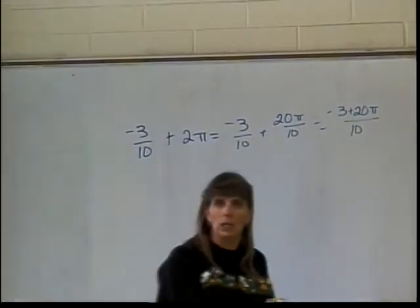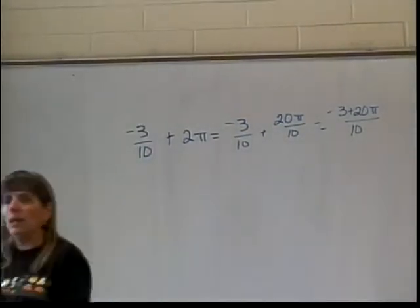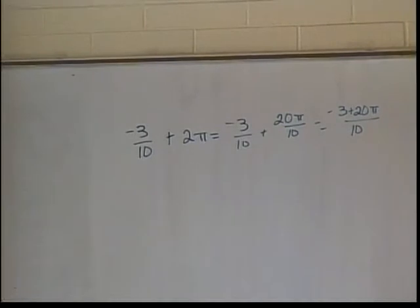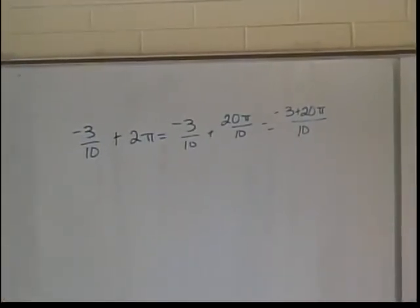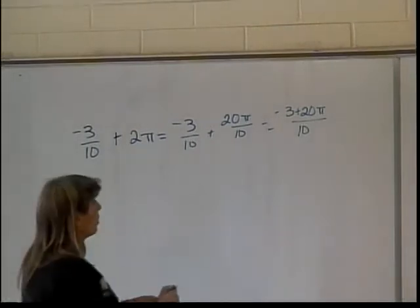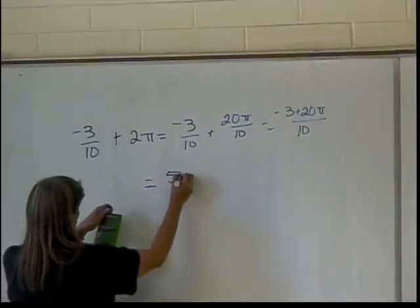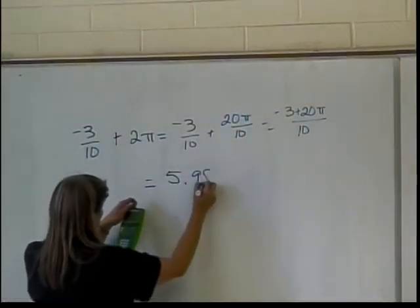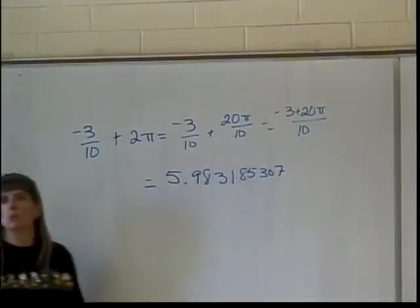I can't put that negative 3 and the 20 together because there's that pi multiplying the 20. But the next step is to figure out what quadrant this is in. I don't know about you, but I don't have this one down. If I can deal with negative 3 tenths plus 2 pi, it's like in quadrant 3. So if I plug this into my calculator, I get out 5.983185307 radians. So it's approximately there.